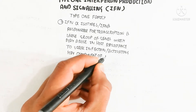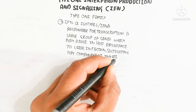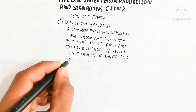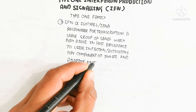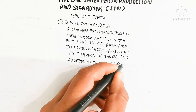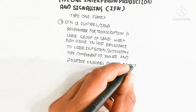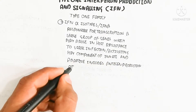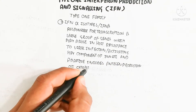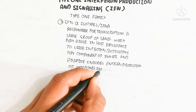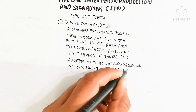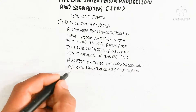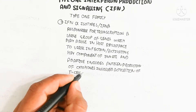Natural killer cells, as well as T cells and B cells, will be activated through interferon receptor binding with interferon, and will proliferate and activate for the killing mechanism — killing the infected cells.